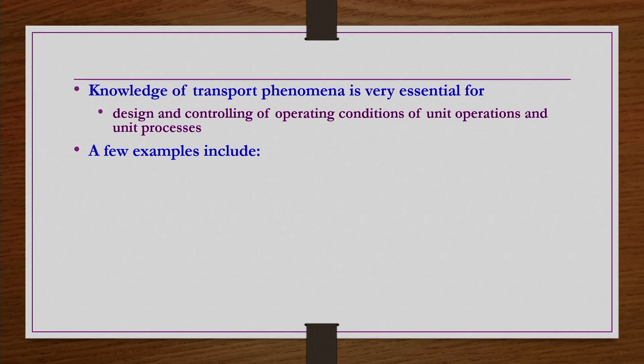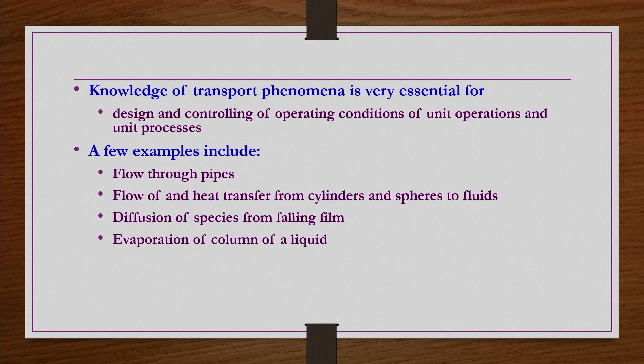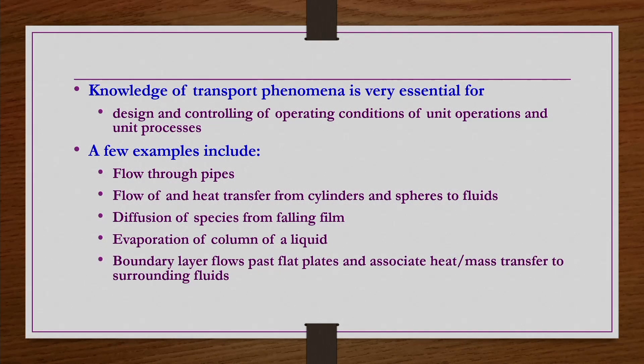Not only design — controlling or tuning the operational conditions can also be effectively done with knowledge of transport phenomena of momentum, heat, and species transfer. Some examples in chemical engineering where these occur include flow through pipes, heat transfer from cylinders and spheres to fluids, diffusion of species from falling film, evaporation of a column of liquid, boundary layer flows, and many more applications.